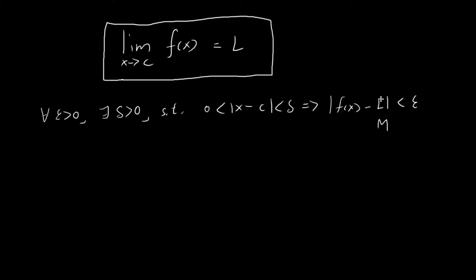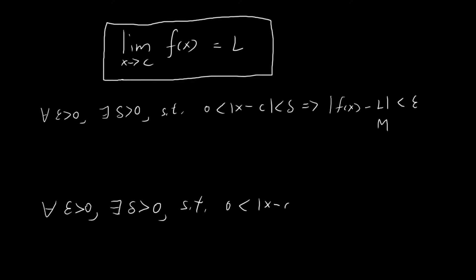So m is a number that's different from L that also satisfies this definition — distinct from L and also fits the epsilon-delta definition — so that if x is close enough to C, then f of x will be close enough to M. If there does indeed exist such a number m, is it even meaningful to talk about this definition? Because this implies that the limit is not unique.